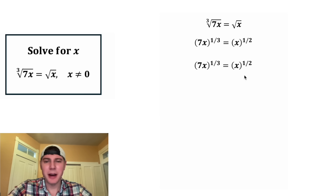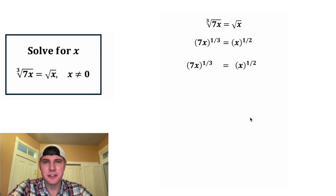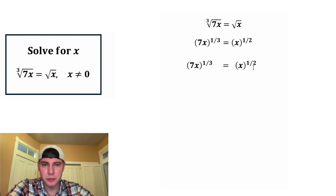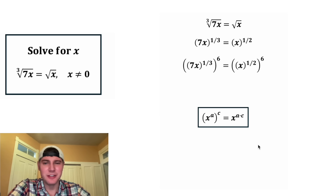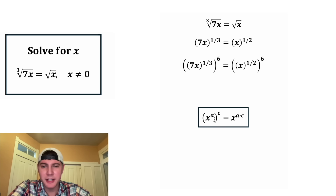For the next step, I don't really like fractions, so let's get rid of these denominators. The lowest common multiple of three and two is six. So if we do both sides of the equation to the power of six, these denominators will go away. And now we can use these notes. Anytime you have something like the quantity x to the a to the power of c,